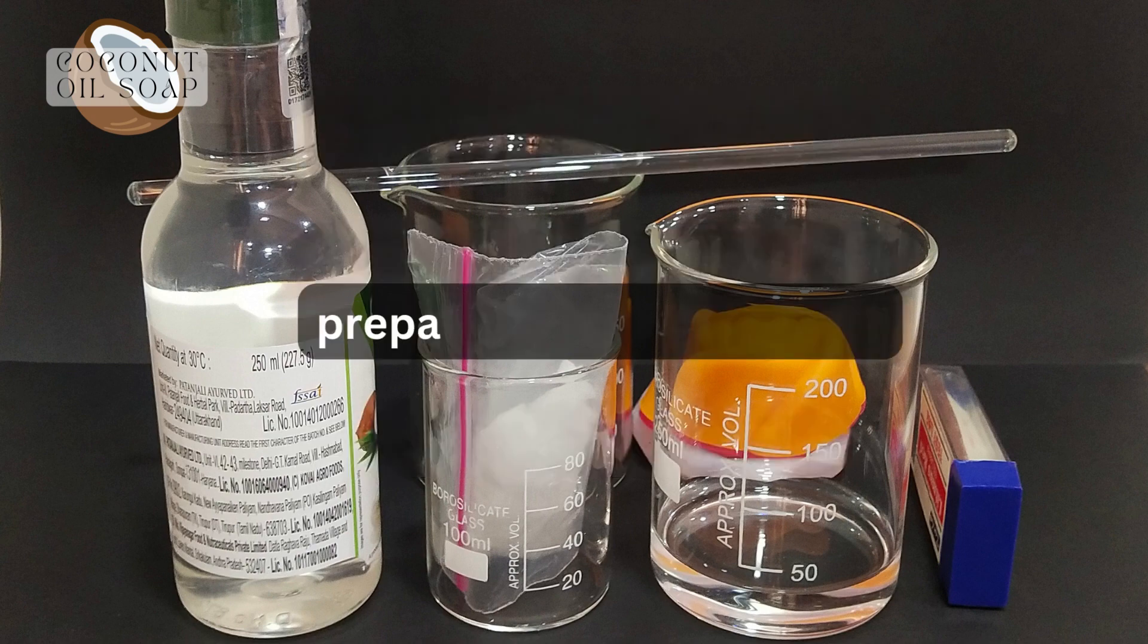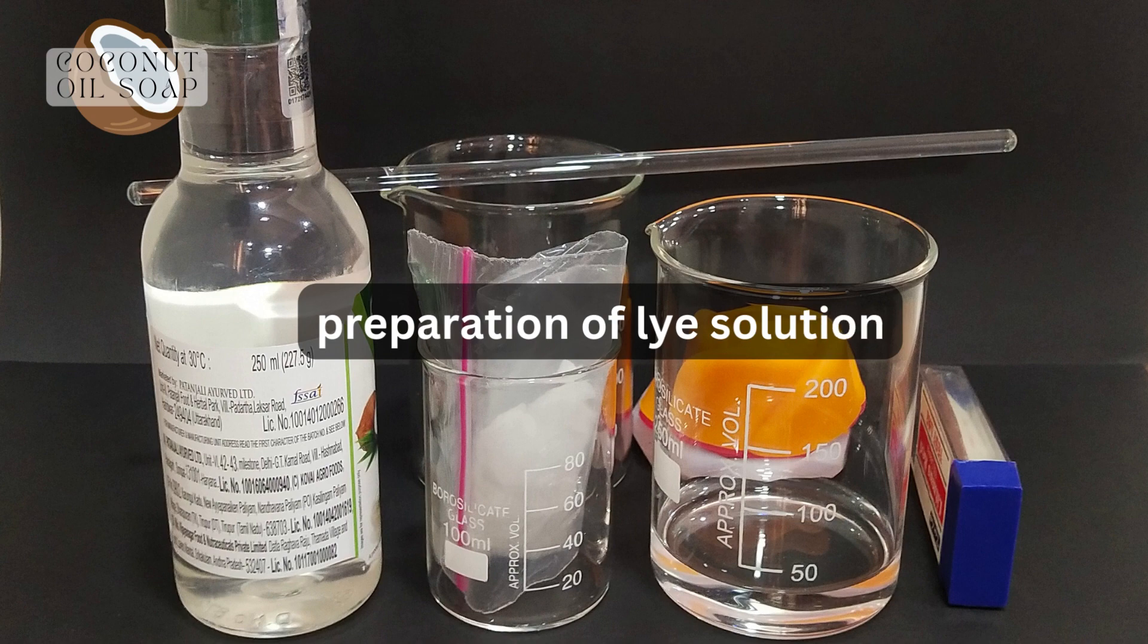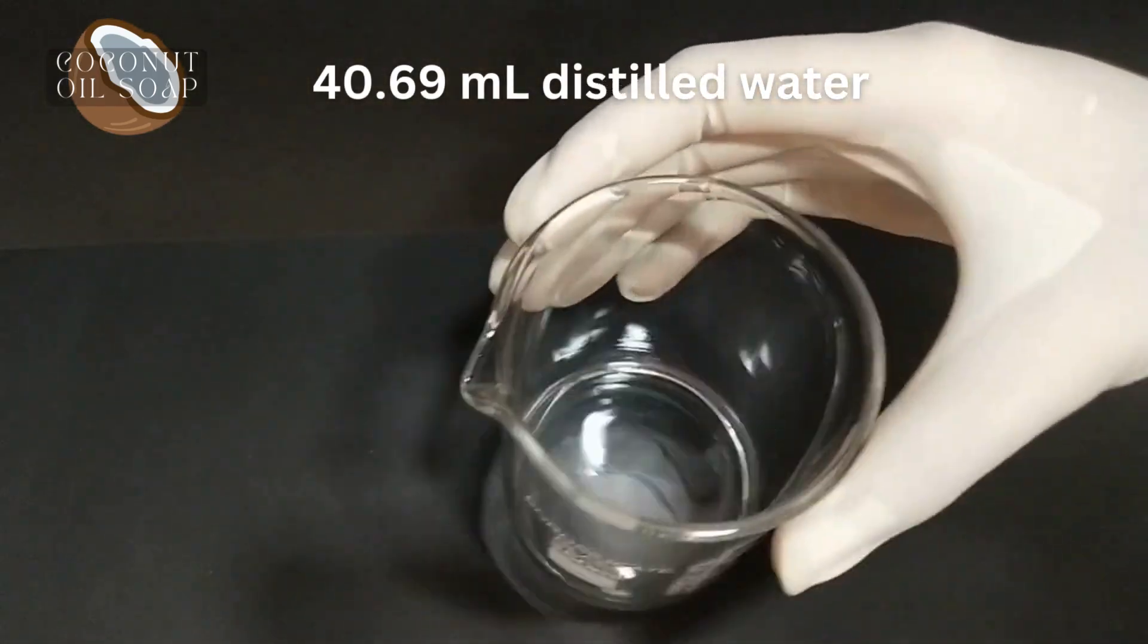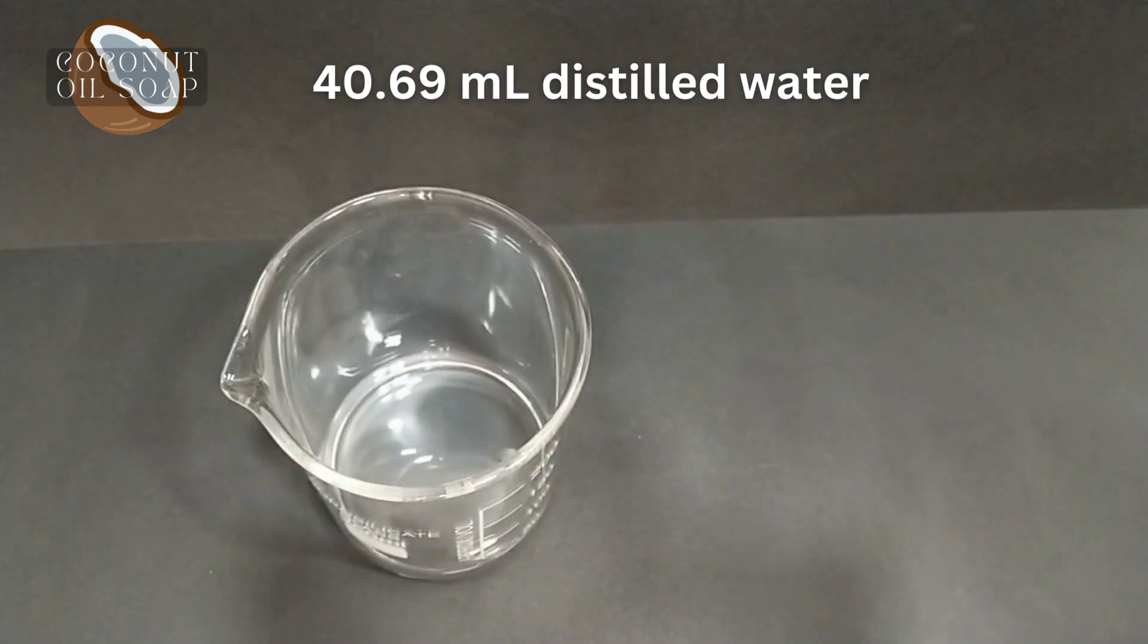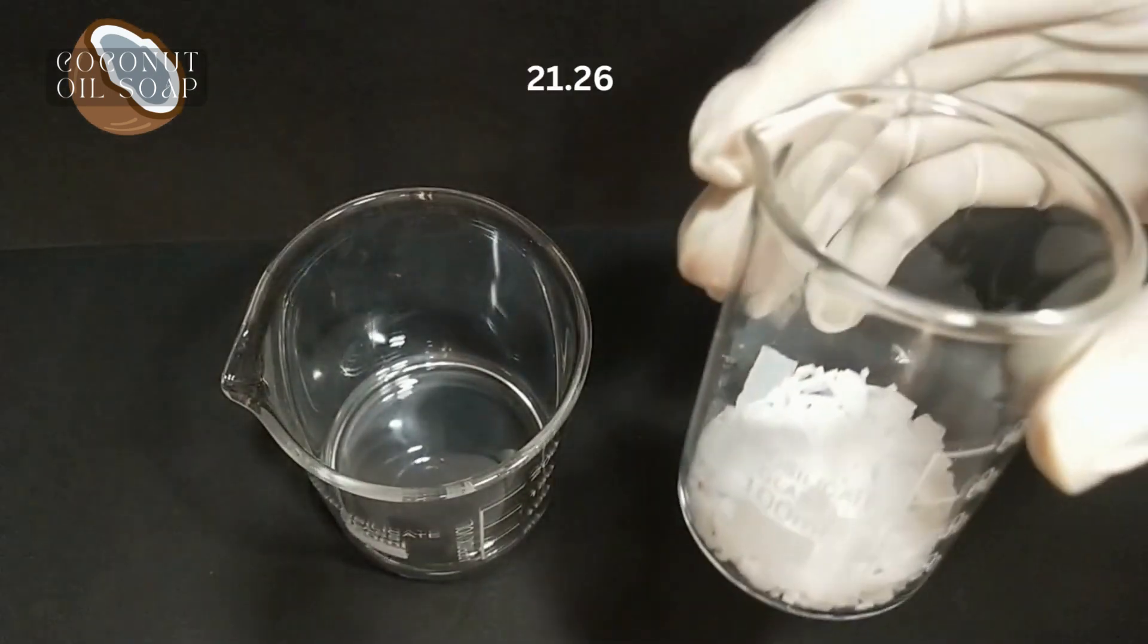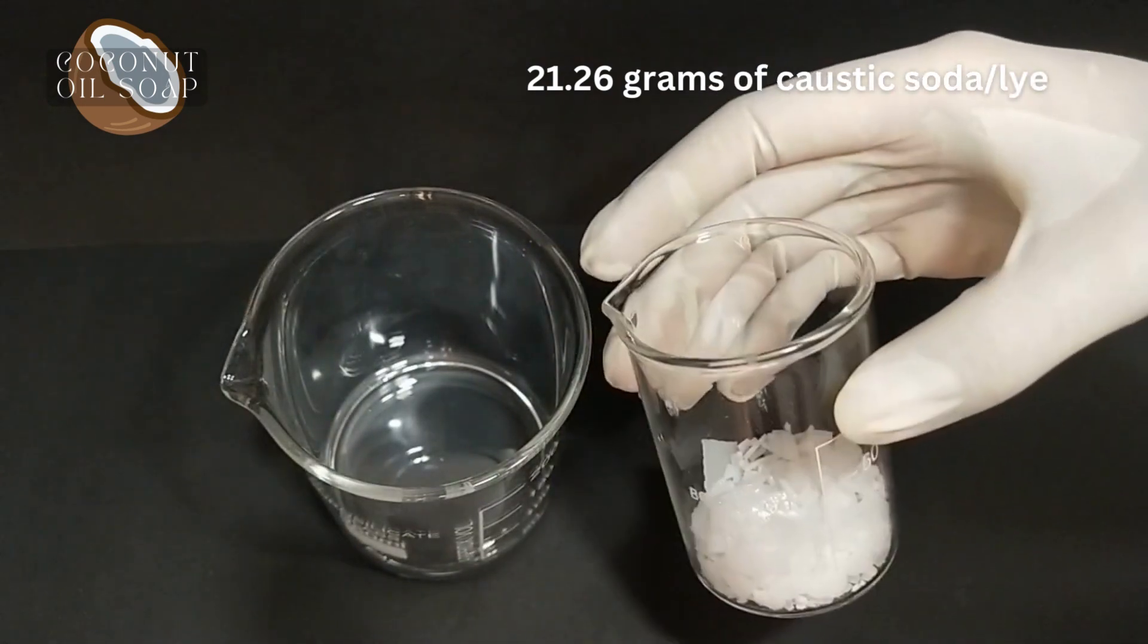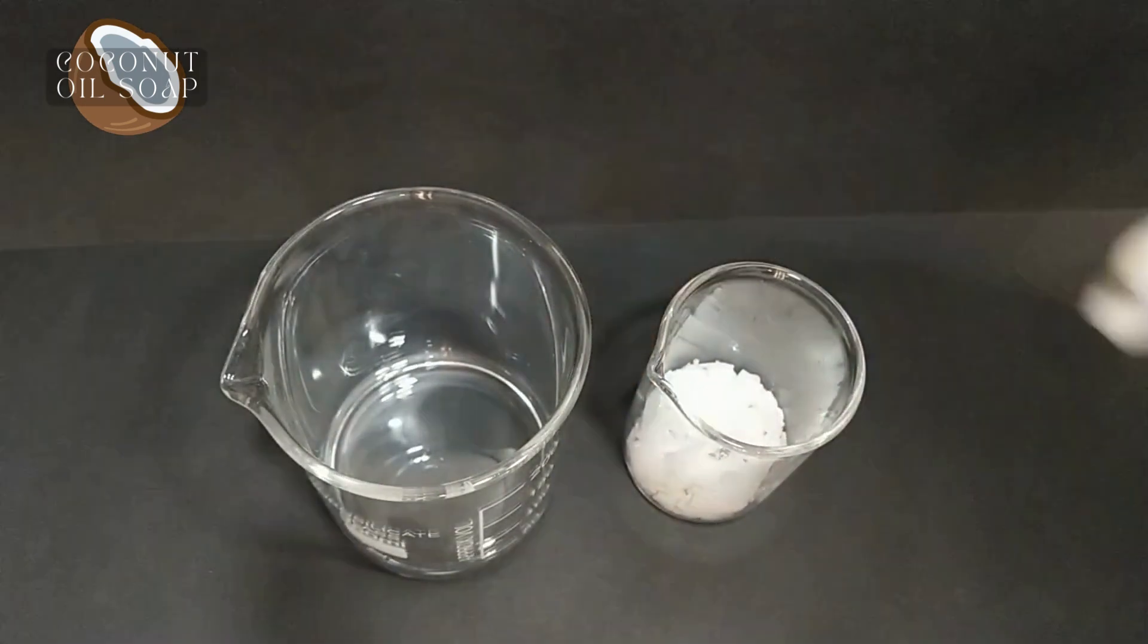So I'm starting this process with the preparation of lye solution. This is the 40.69 ml of distilled water and this is 21.26 grams of lye or caustic soda. And don't forget to wear a mask because caustic soda releases coughing fumes which is not good for our health.